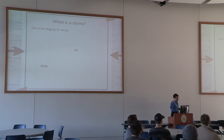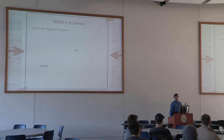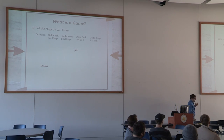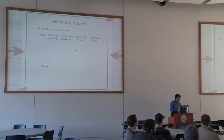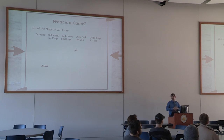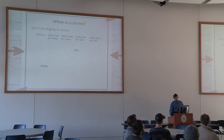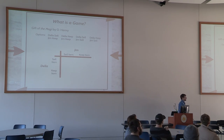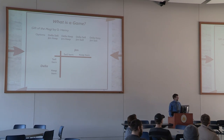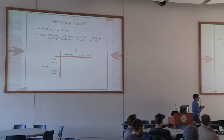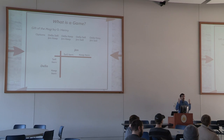This is a great story, but it's also a great way to introduce game theory. We have two players — Jim and Della — and they both have strategies: what are they going to do for a Christmas gift? They can sell their most prized possession to buy a nicer gift, or hold on to it and buy whatever they can afford. Usually in game theory we list these in a matrix, with Jim across the top and Della on the side. Now we have to figure out payoffs — what are these outcomes worth to the players?